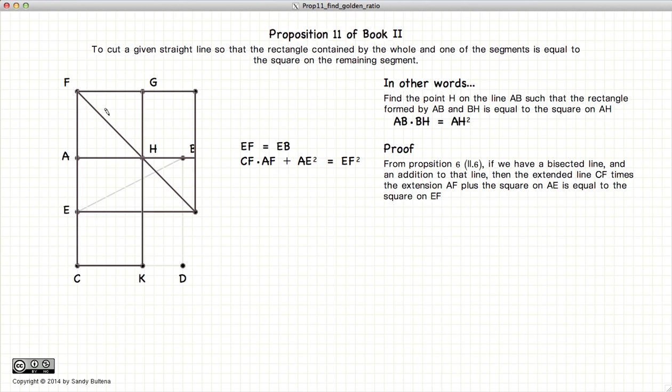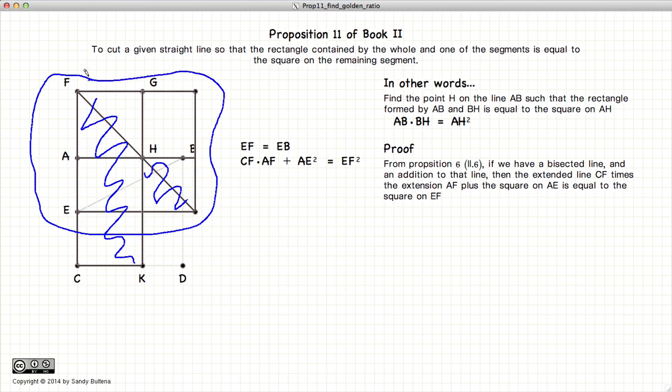Proposition 6 of Book 2 states that CF times AF, which is this area here, plus AE squared, which is this area here, is equal to the square of EF. So, that's from Proposition 6 of Book 2.